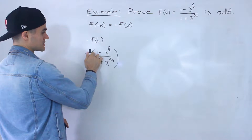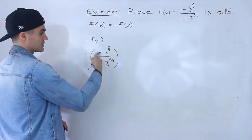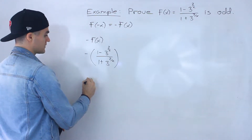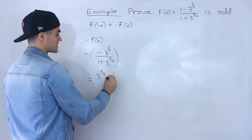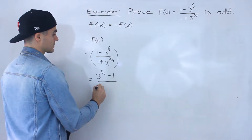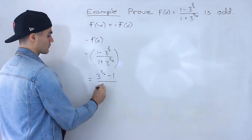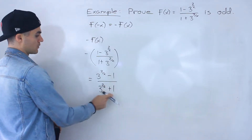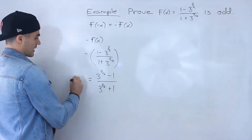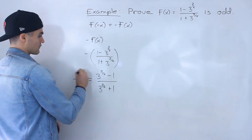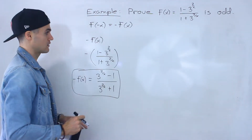Here we have a negative sign, so this positive one turns into a negative one, and then this minus 3^(2/x) becomes positive. So -f(x) ends up being (3^(2/x) - 1) / (1 + 3^(2/x)), keeping the denominator as is. Basically all we did was change the signs in the numerator.